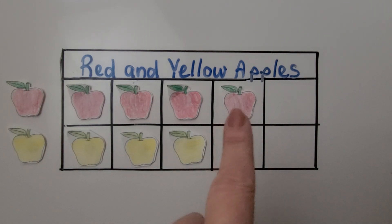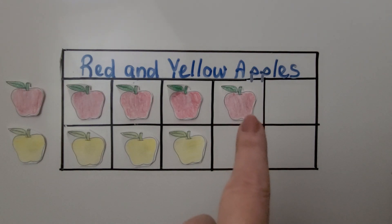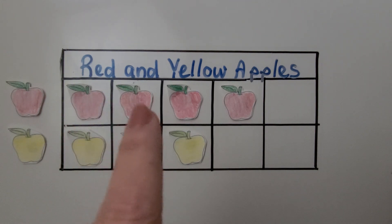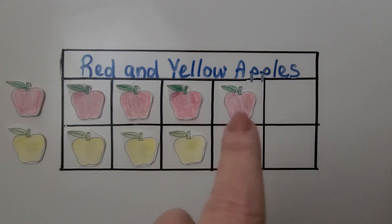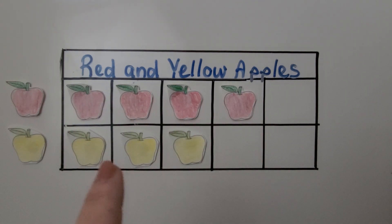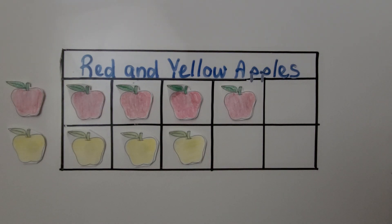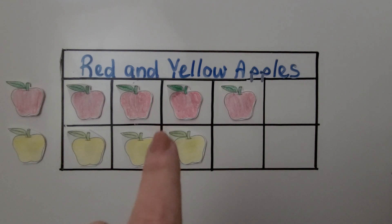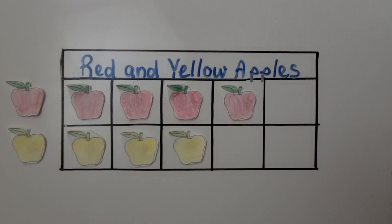We can easily see we have more red apples than yellow apples — the red row sticks out farther. We have one, two, three, four red apples and one, two, three yellow apples. We don't count the picture labels. We count what is in the boxes of the graph.